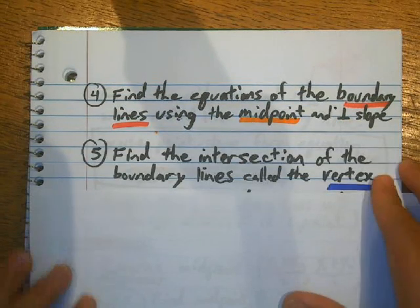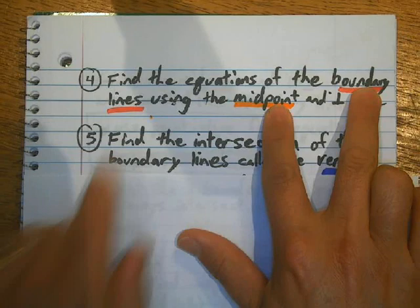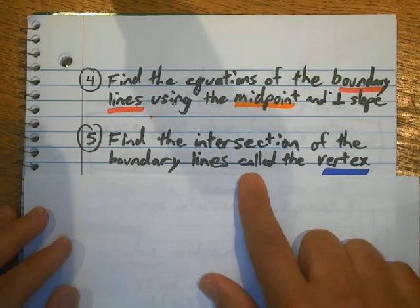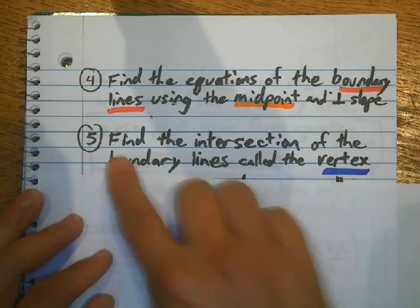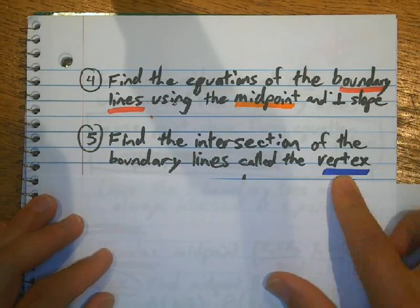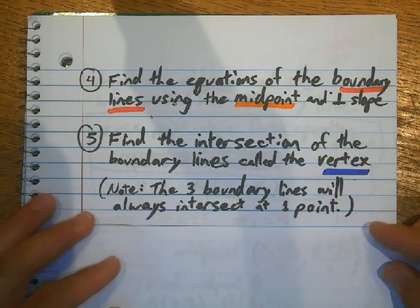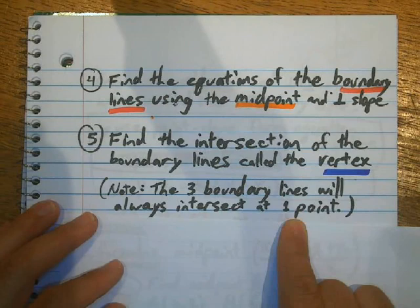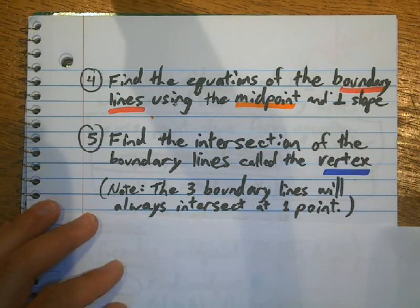Then, lastly, once I have the equation of the boundary line, and if I have the equation of two of the boundary lines, that will give me the intersection called the vertex. Okay, and fortunately, so all three boundary lines will always intersect at one point, so I really only need to find two of the boundary lines, and that intersection would be the intersection of all three lines.